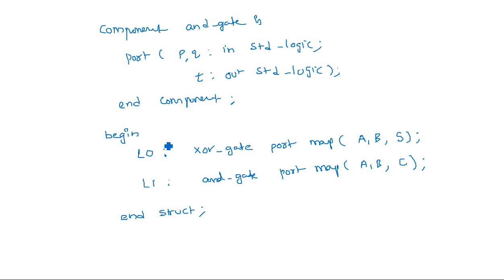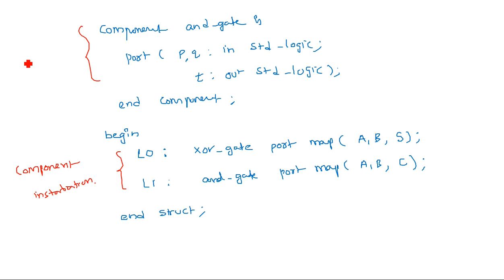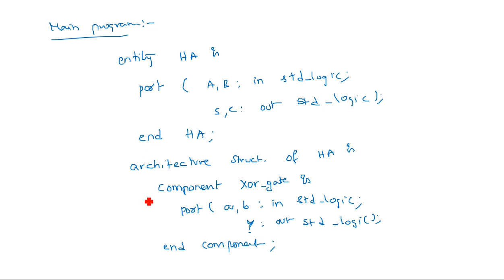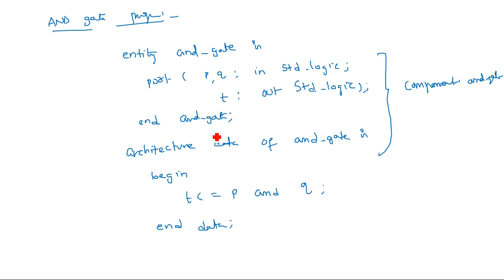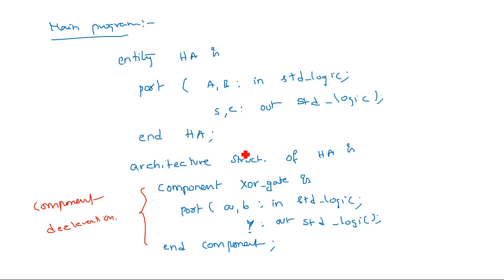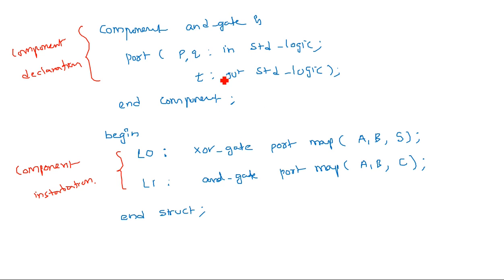This is component declaration and component instantiation. The L0 and L1 statements are component instantiation. The component declarations are the blocks written before begin. The XOR gate and AND gate programs are the supporting files. The components declared in the main program will work only if those two supporting files are available. Whenever this line is written, the current program is automatically linked with those previous programs. This is component declaration and component instantiation. Thank you.